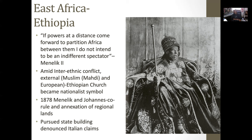One of those reasons is Menelik II. In the latter part of the 19th century, when he sees the various European armies and trading corporations begin moving in and around, he makes his stance pretty clear: 'If powers at a distance come forward to partition Africa between them, I do not intend to be an indifferent spectator.' That's a hint he's not going to sit on the sideline and allow his land to be taken over.